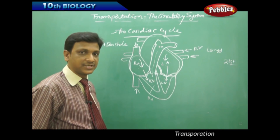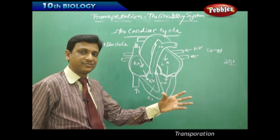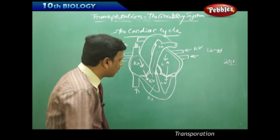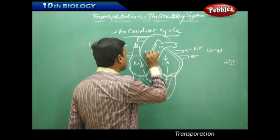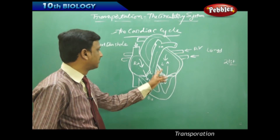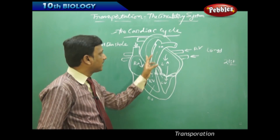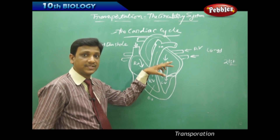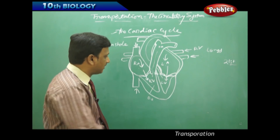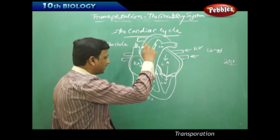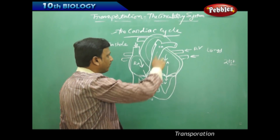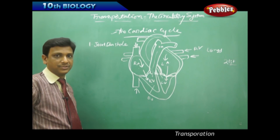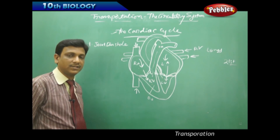When the left ventricle contracts, the oxygenated blood it contains is pumped into the systemic aorta — a large artery that supplies oxygenated blood to different parts of the body. So the left ventricle pumps into the systemic aorta and the right ventricle pumps into the pulmonary artery. In this way, blood is pumped to different parts by the ventricles.